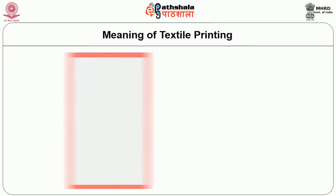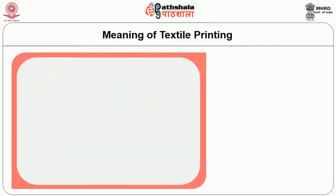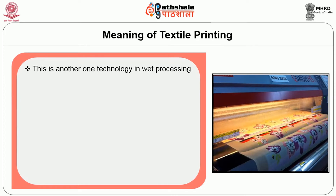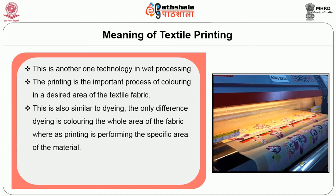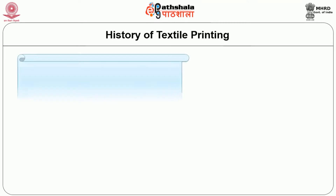Let us move on to the meaning of textile printing. This is another technology in wet processing. Printing is the important process of coloring a desired area of textile fabric. This is also similar to dyeing; the only difference is that dyeing colors the whole area of the fabric, whereas printing is performed on the specific area of the material. Printing is followed after the pre-treatment processing.